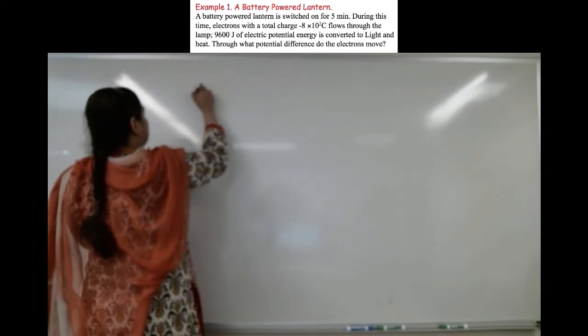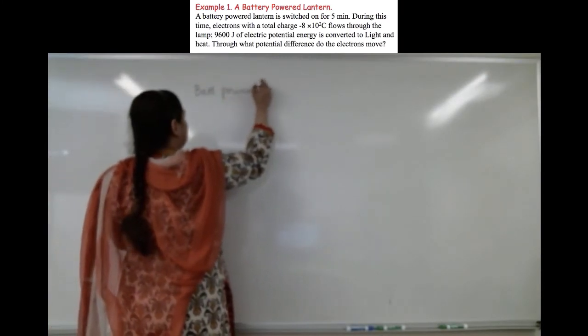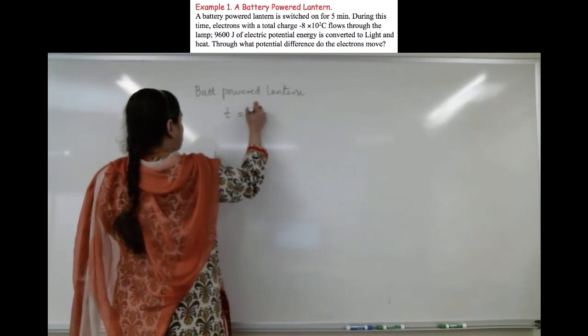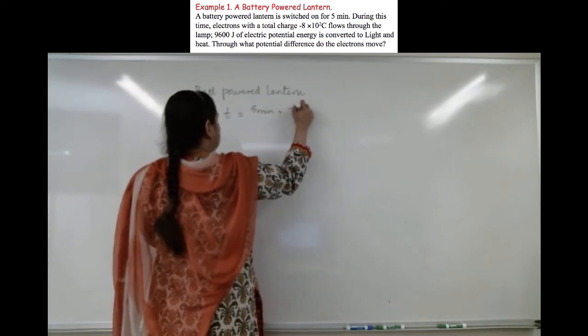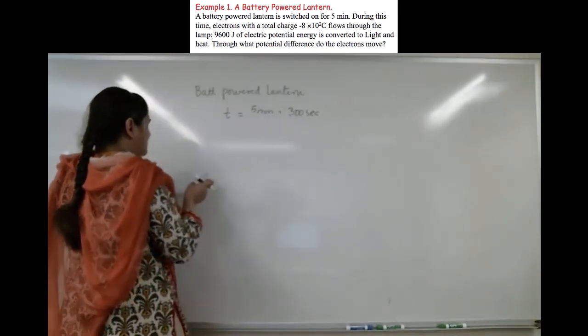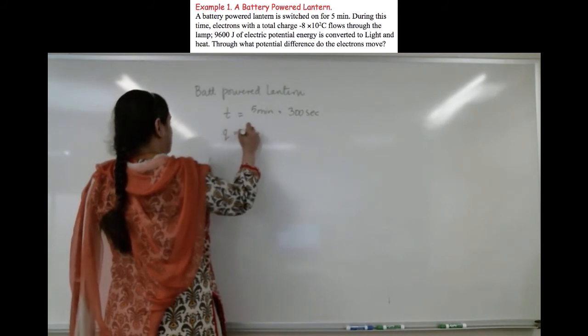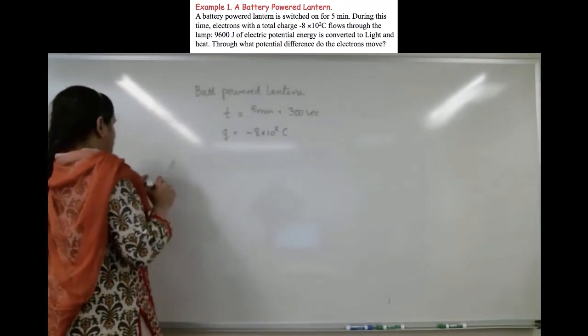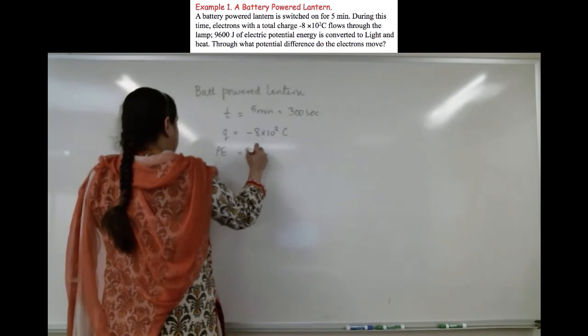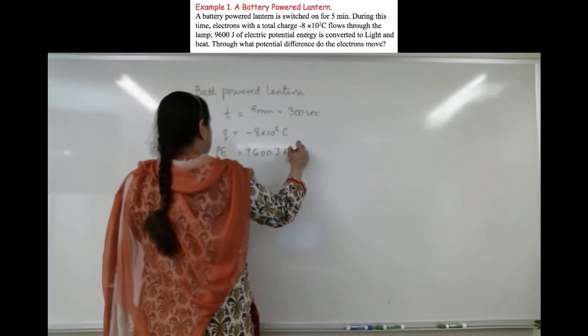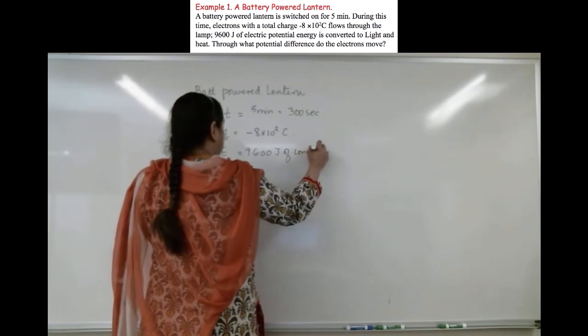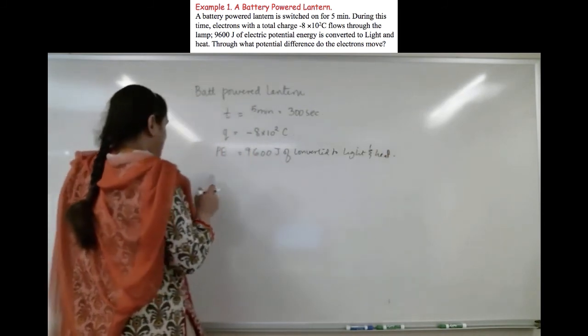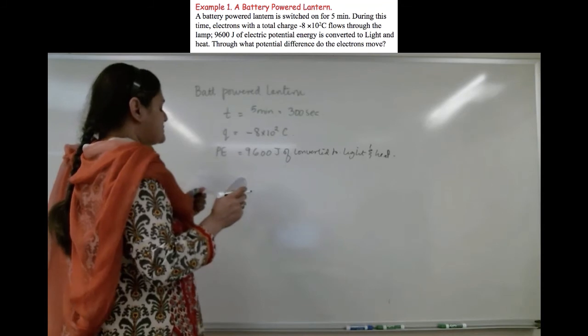This question gives us a battery-powered lantern. The time that it's switched on is for five minutes or 300 seconds. Electron with a total charge of, so charge on the electron is minus 8 times 10 to the plus 2 coulomb, passed through the lamp. And it says that 9,600 joules of electrical potential energy is converted to light and heat. What potential difference do these electrons move through? So we are being asked, what delta V do these electrons move through?